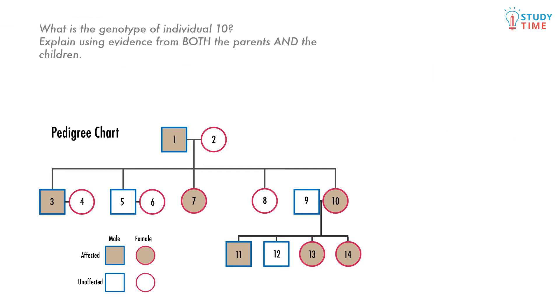Our next question tests our knowledge of the pedigree chart. Question asks, what is the genotype of individual 10? Explain using evidence from both the parents and the children. We can see from the key that individual 10 is an affected female, so she must have the dominant allele. What we need to work out now is whether her genotype is homozygous dominant or heterozygous dominant, and we can do this by looking at her parents and her children.